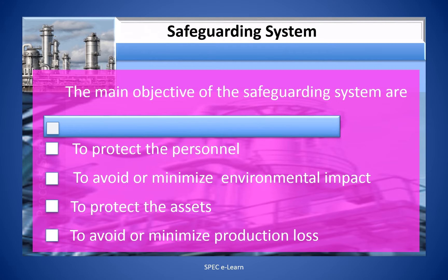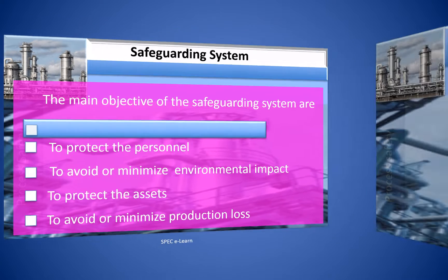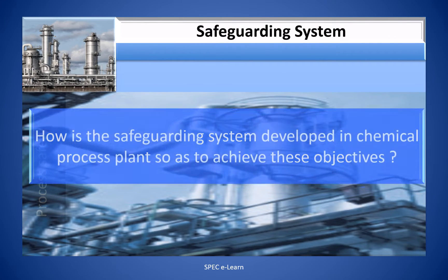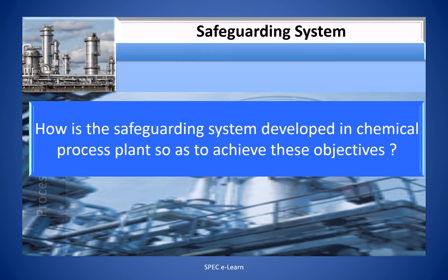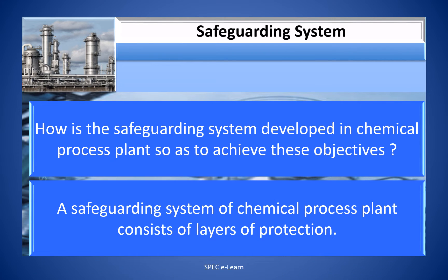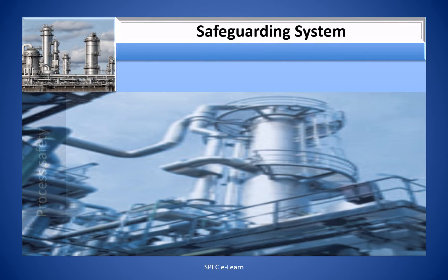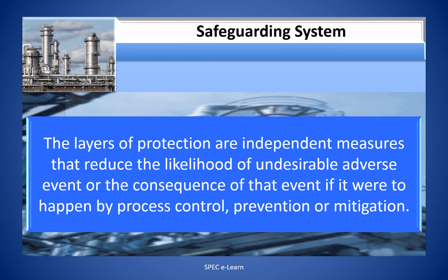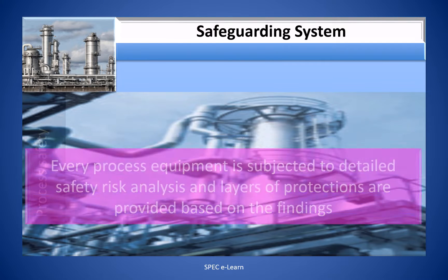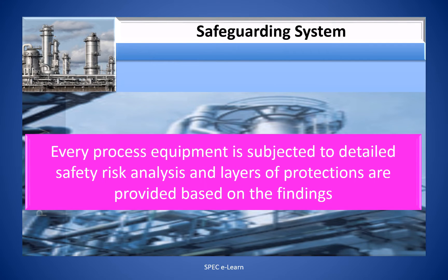The main objectives of safeguarding systems are: to protect personnel, to avoid or minimize environmental impact, to protect assets, and to avoid or minimize production loss. A safeguarding system in a chemical process plant consists of layers of protection — independent measures that reduce the likelihood of an undesirable adverse event or its consequences through process control, prevention, or mitigation. Every process equipment is subjected to detailed safety risk analysis and layers of protection are provided based on the findings.